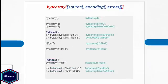The next function, bytearray, is very similar to bytes. The bytearray function converts the object passed as an argument to a bytearray object. Compared to bytes, bytearray is a sequence of mutable bytes with values between 0 and 255. Calling bytearray without any argument returns an empty bytearray. Calling it with an integer returns that many bytes, each equal to 0.